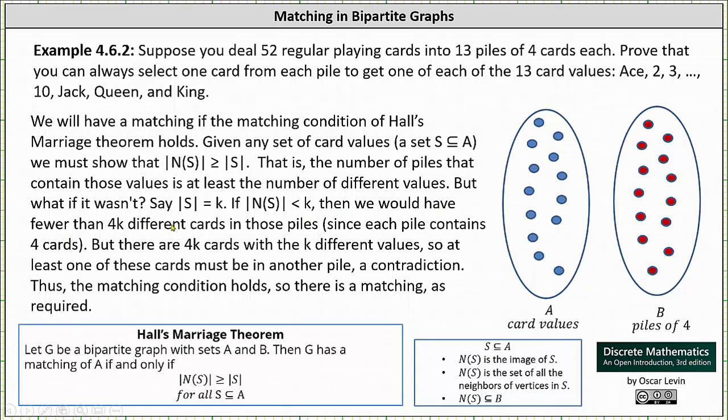then we would have fewer than 4K different cards in those piles, since each pile contains four cards. But there are 4K cards with K different values, so at least one of these cards must be in another pile, which is a contradiction.